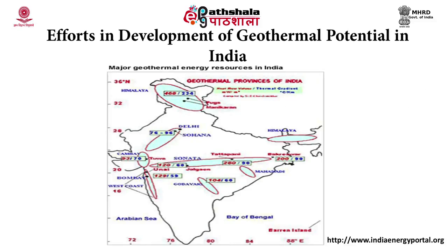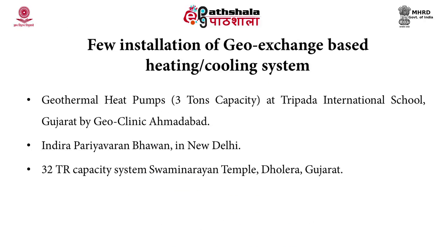In the Puga geothermal field, the presence of a geothermal reservoir is at a depth of about 1.5 to 2 km, with the estimated depth of the reservoir at about 4 to 5 km. In the Tathabani geothermal field, the hot spring area is underlain by a highly conductive subsurface section related to a major geothermal reservoir, with an estimated temperature at 3 km depth of about 260 degrees Celsius. There are also some installations of geo-exchange based heating and cooling systems, including geothermal heat pumps at Tripatha International School Gujarat, Neera Periyavaran Bhavan in Delhi, and a 32 TR capacity system in Swaminarayan Temple, Dolaraj Gujarat.